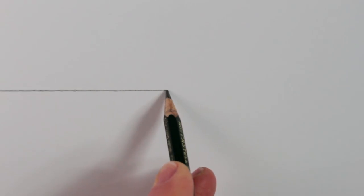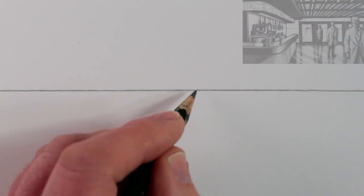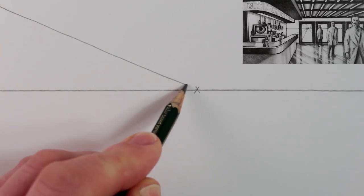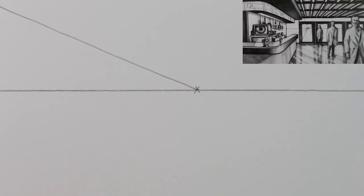So the first step to draw this is to draw a horizontal line in the middle of our page. Next draw a mark for the vanishing point in the center of the horizon line. Now draw a diagonal from the top left and the bottom left of your page towards the vanishing point.